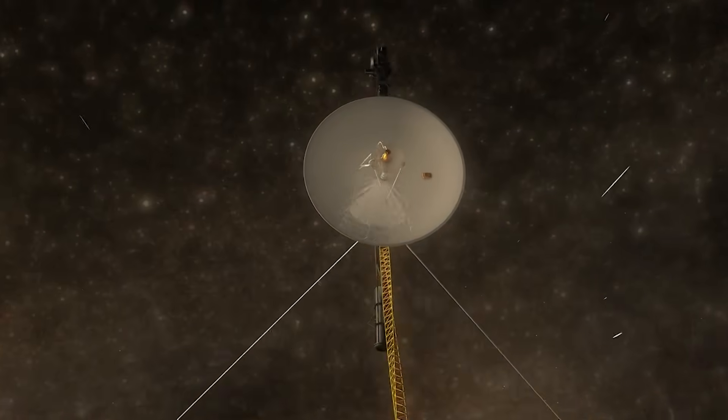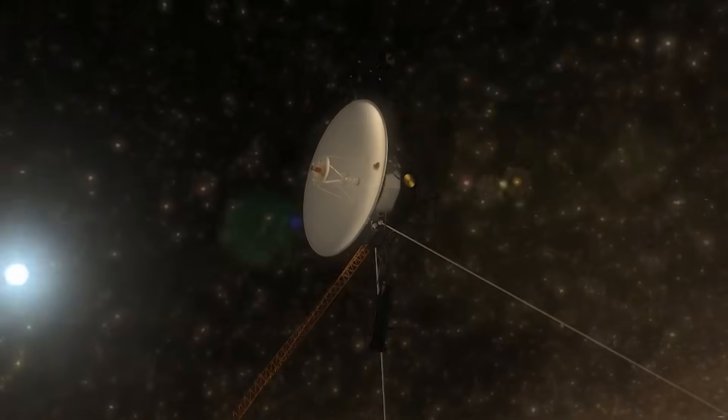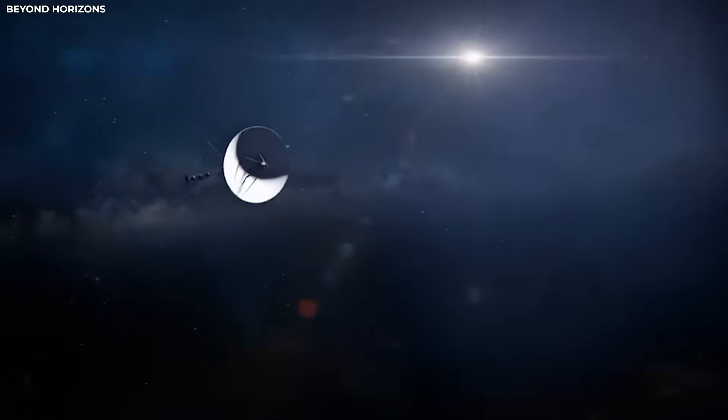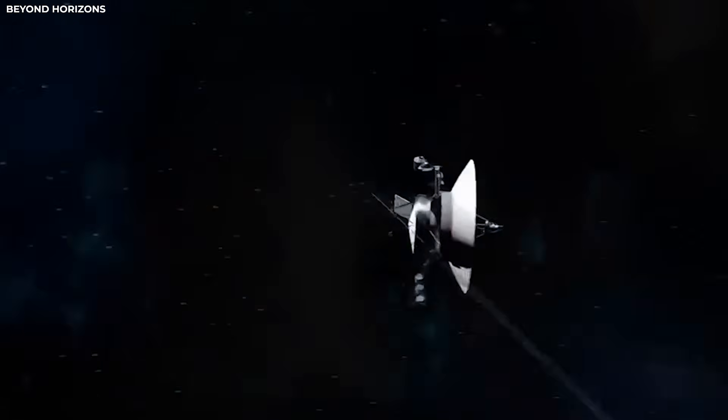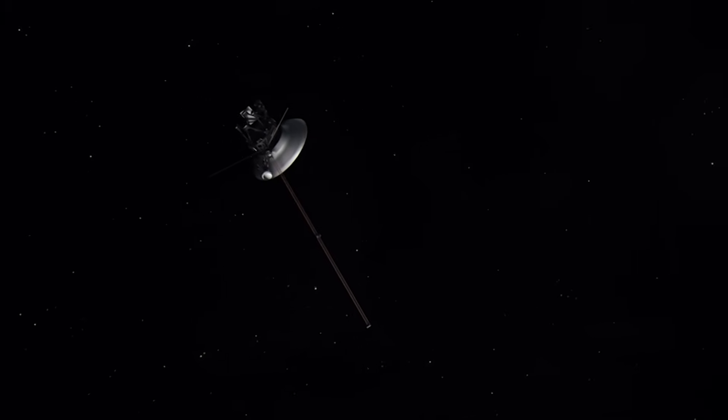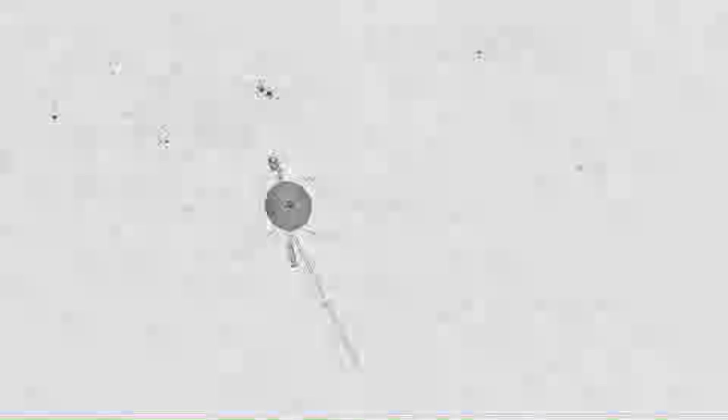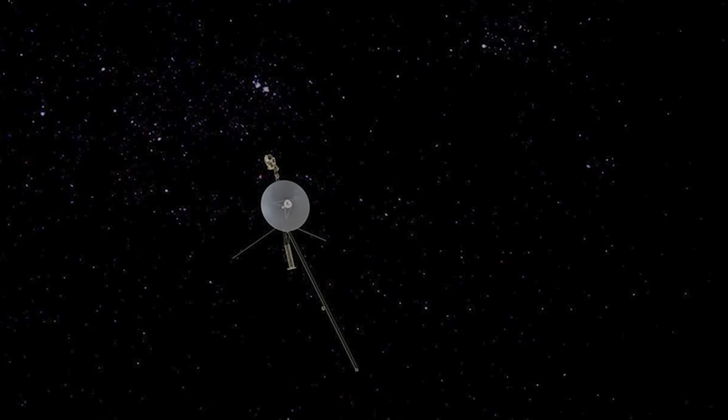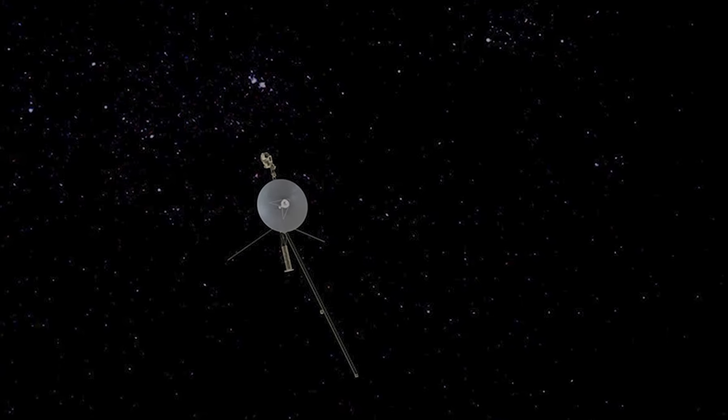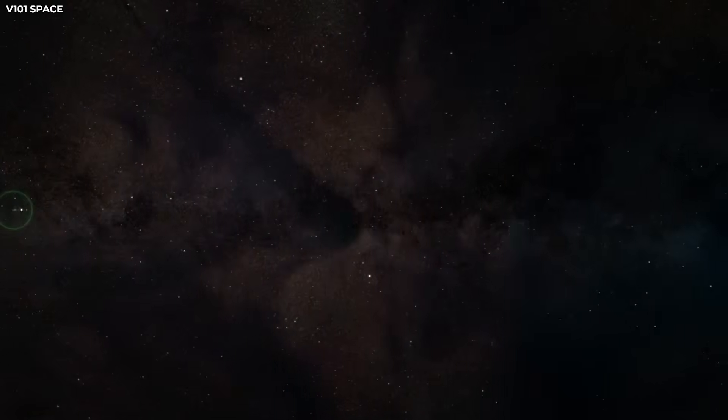There is even a theory that something ancient has been reawakened. Maybe Voyager 2 passed near an old machine floating in space. That machine could have been waiting for a long time, built by beings who no longer exist. When Voyager 2 came close, the machine sent out the signal.